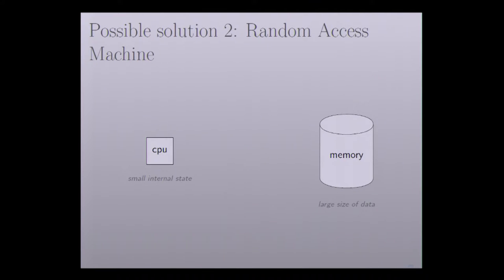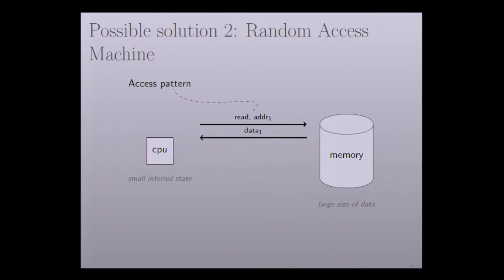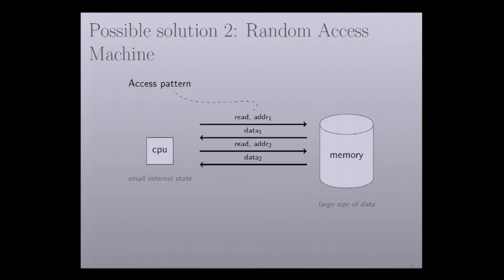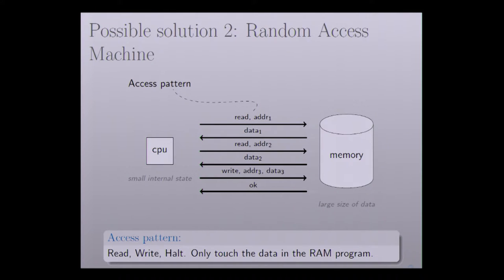Another possible solution is to use a random access machine. In a standard RAM program, there is a CPU with some small internal states, and also there is a memory which has a large size of data. The CPU can execute some instructions, like reading the data from address 1. We call these instructions the access pattern. Then the CPU will go to the next internal state and be ready for executing the next instruction. There are two other possible instructions: write data into memory, and halt, which indicates the RAM program will be terminated.